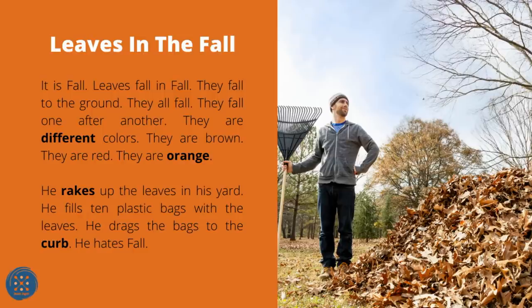Leaves in the Fall. It is fall. Leaves fall to the ground — they all fall, one after another. They are different colors: brown, red, and orange. He rakes up the leaves in his yard. He fills ten plastic bags with the leaves and drags the bags to the curb. He hates fall.